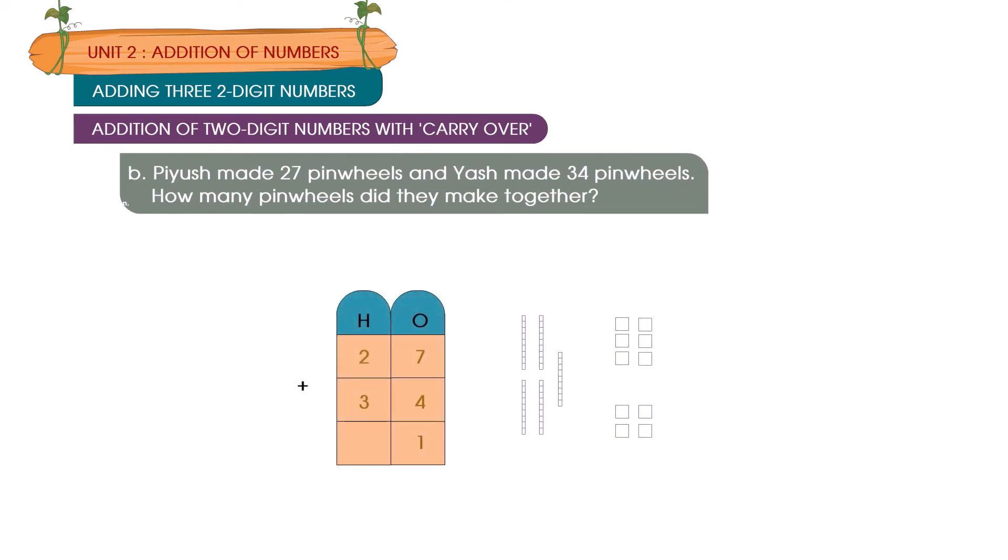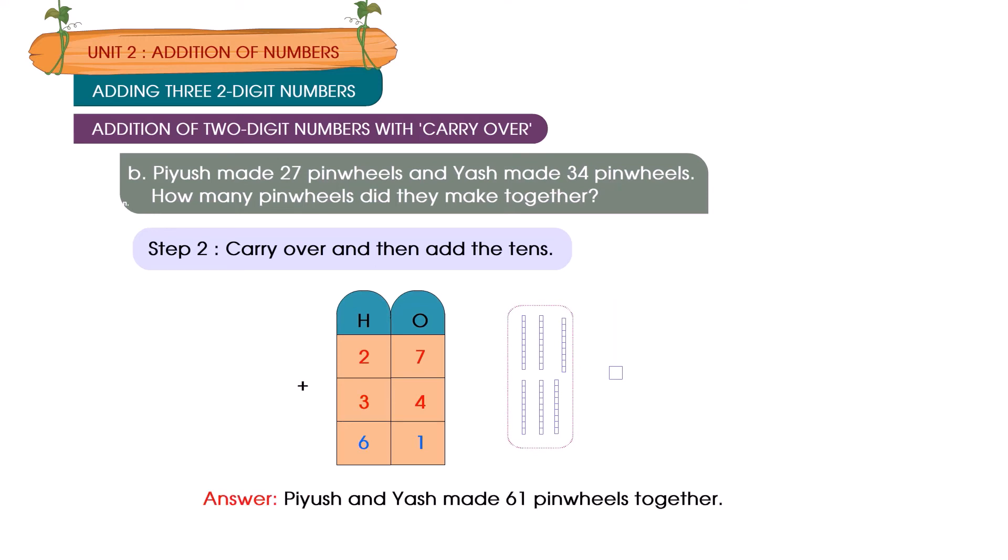Piyush made 27 pinwheels and Yash made 34 pinwheels. How many pinwheels did they make together? Step 1: First add the ones. Step 2: Carry over and then add the tens. Piyush and Yash made 61 pinwheels together.